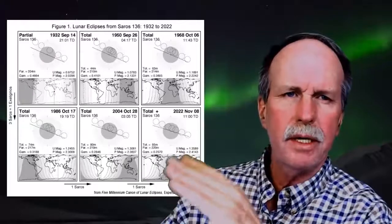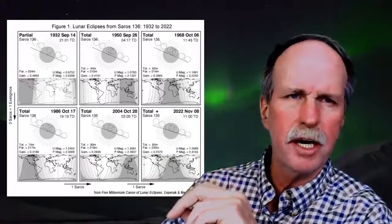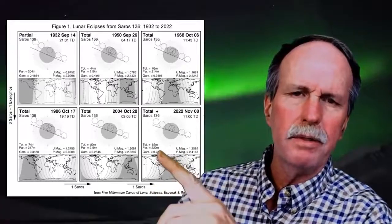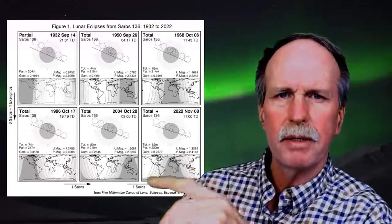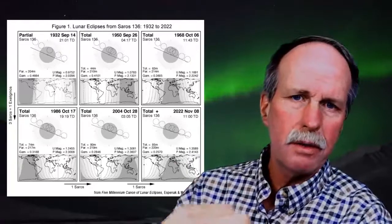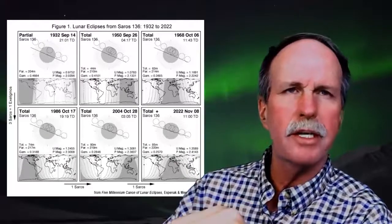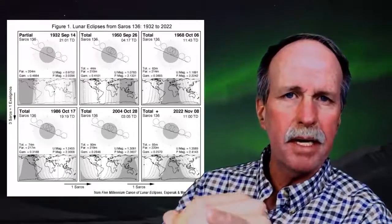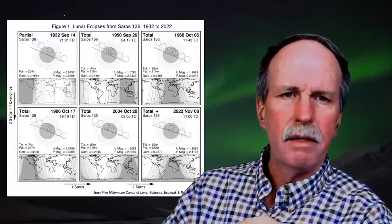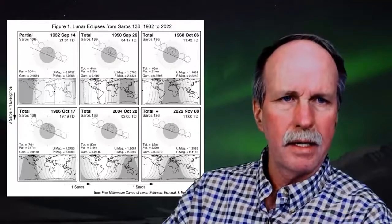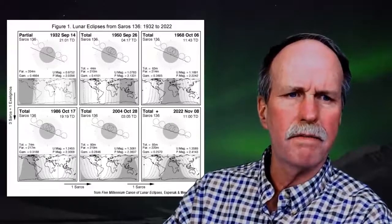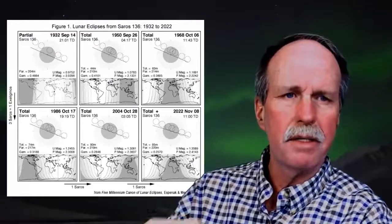The effect of the Saros cycle is that you get subsequent eclipses with similar geometry. Here we have a total lunar eclipse on September 14th, 1932, in Saros cycle number 136. Notice the path the moon takes in relationship to the umbra, the penumbra, and the ecliptic plane. Eighteen years later in 1950 we see a very similar path, and again in 1968, 1986, 2004, and we'll have another in this same cycle in 2022.